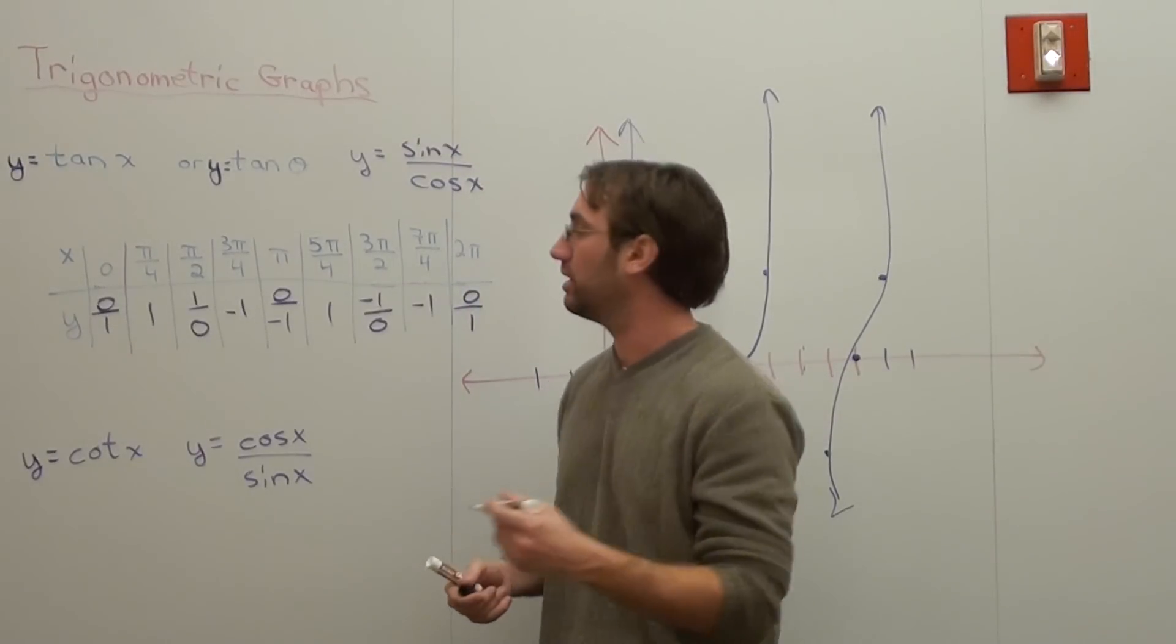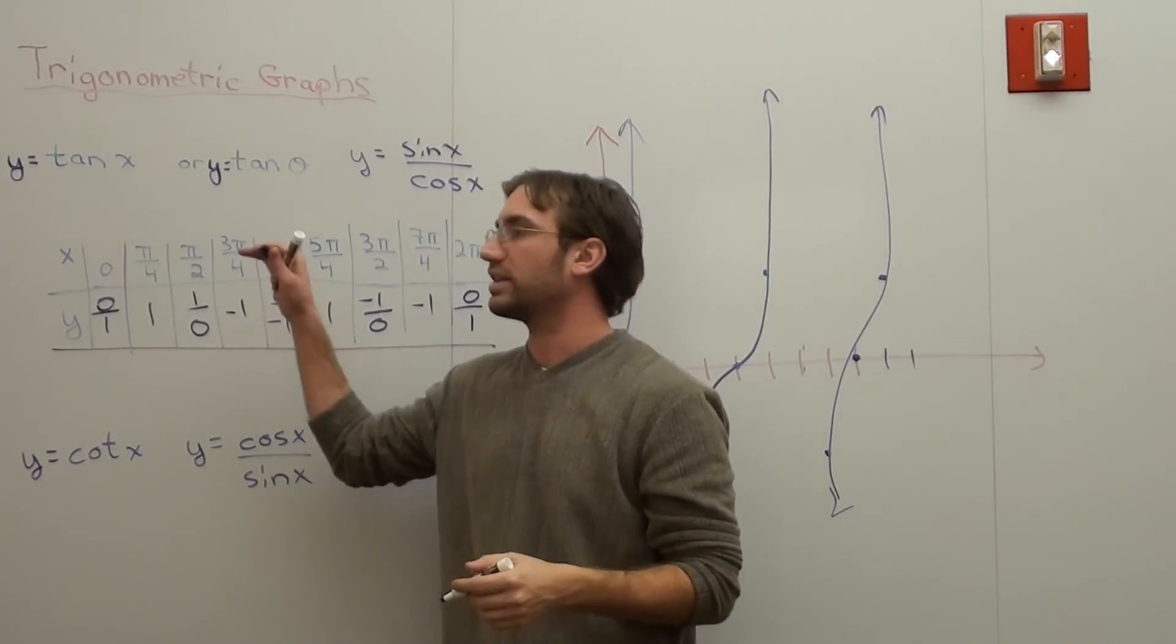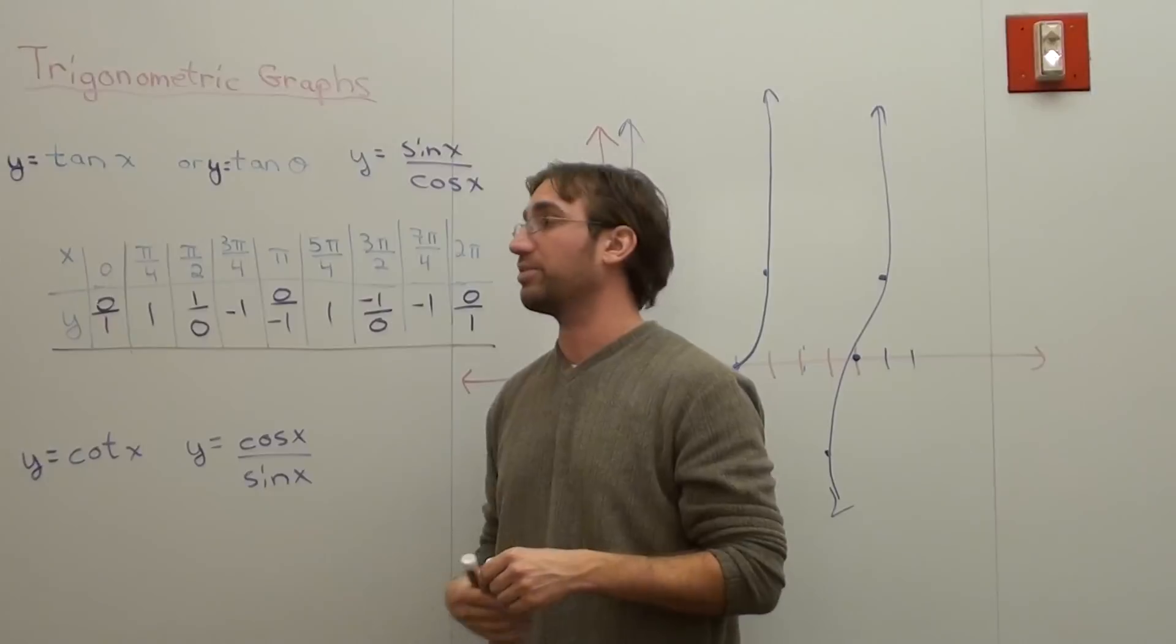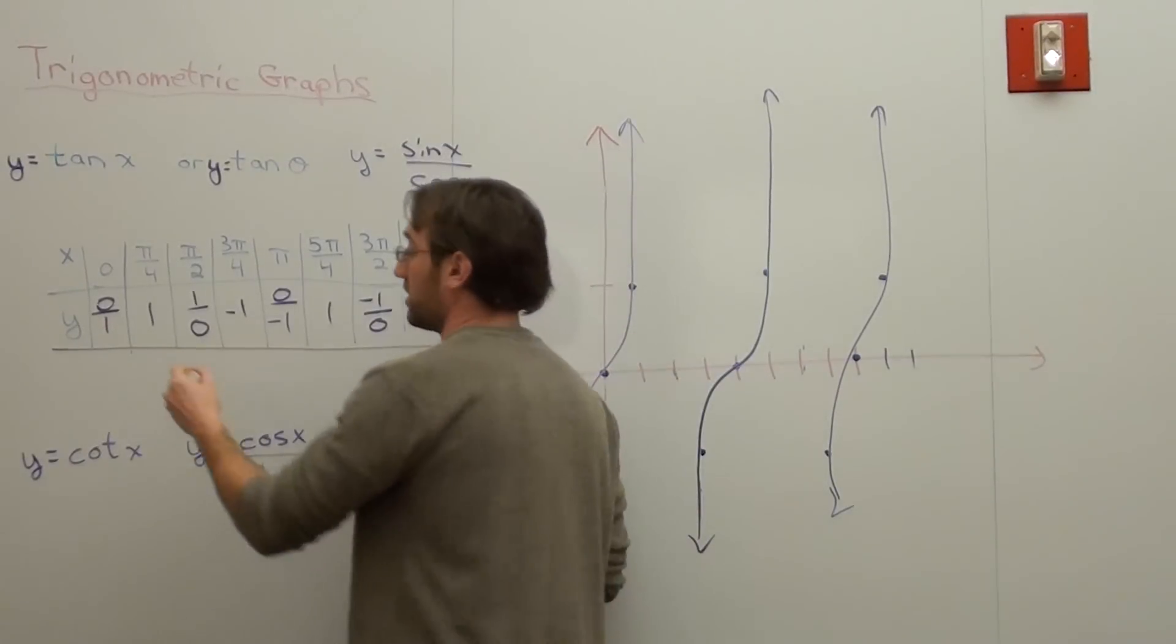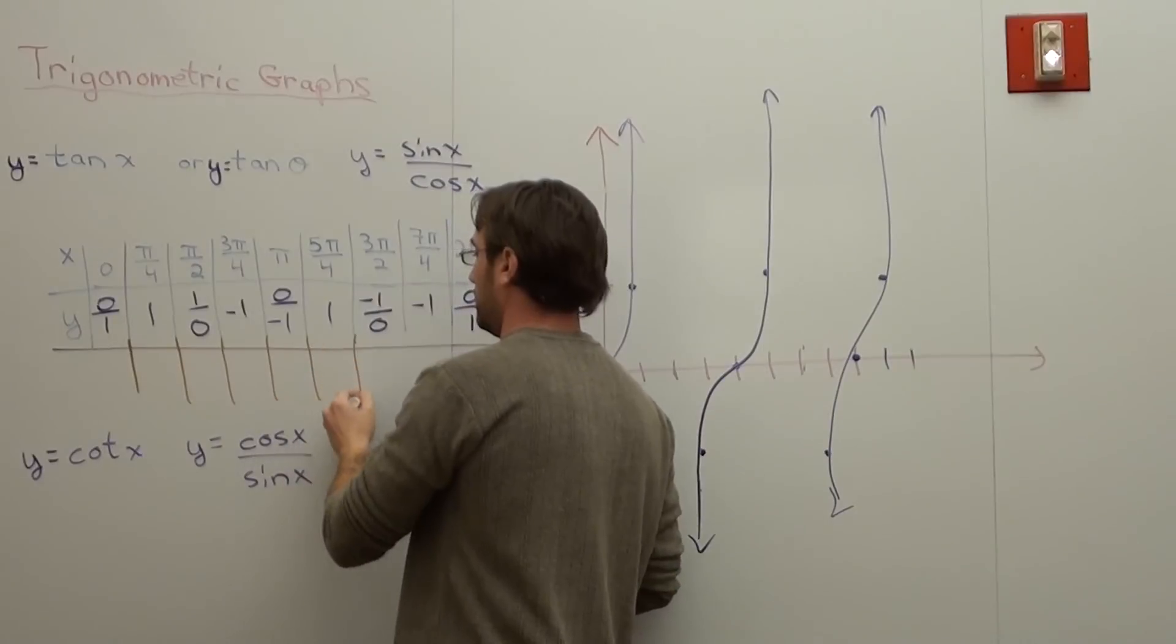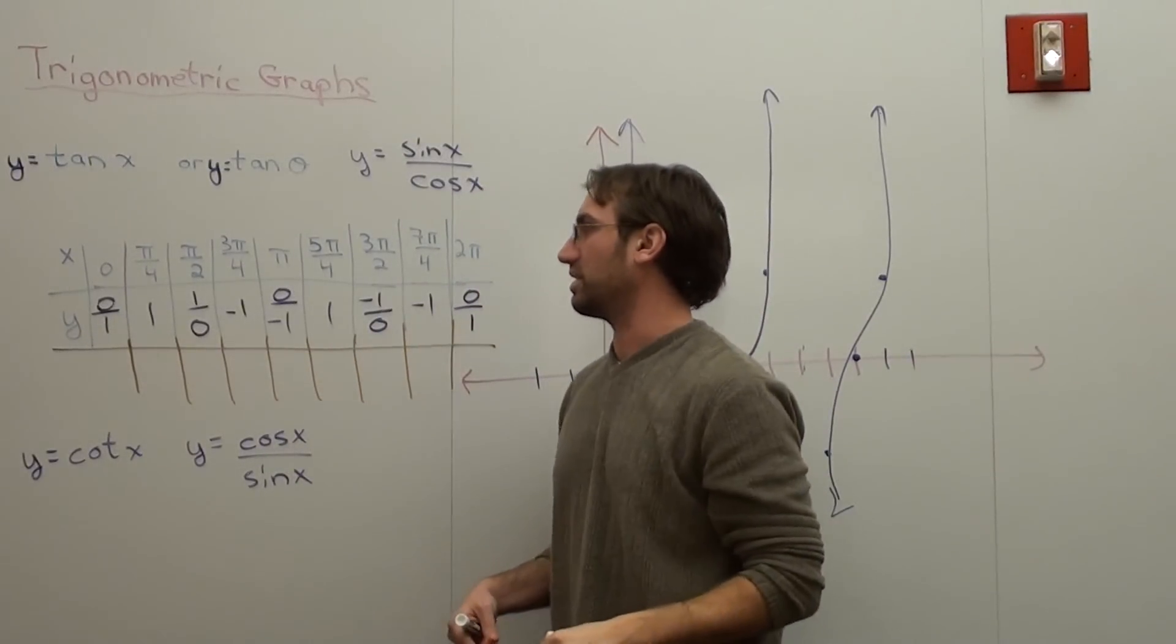So when I do that, I'm going to make myself a table. And in relation to the tangent graph, the cotangent is just the reciprocal. So what we're going to be doing is we're going to be flipping all our y values. Now, does that make a difference? Absolutely, actually.